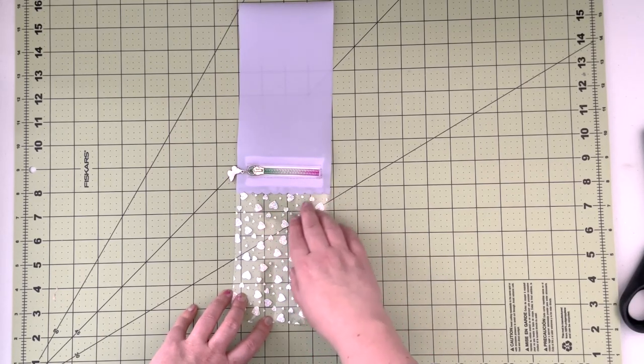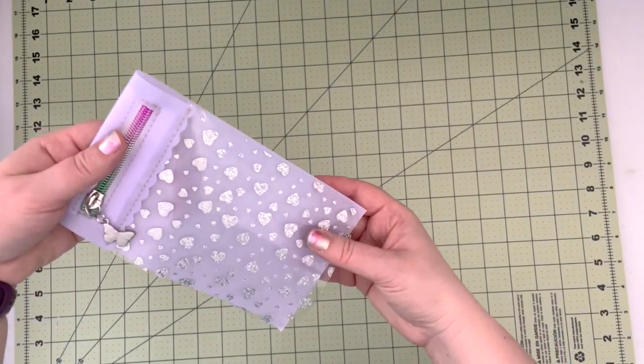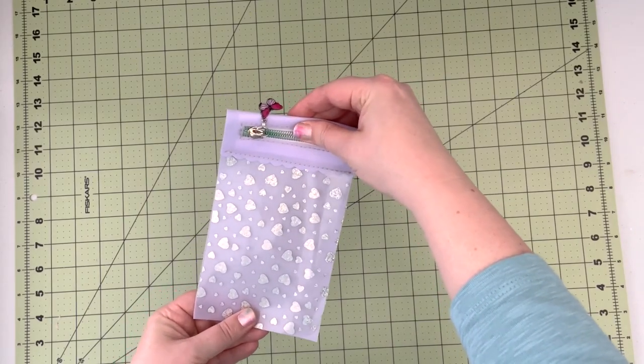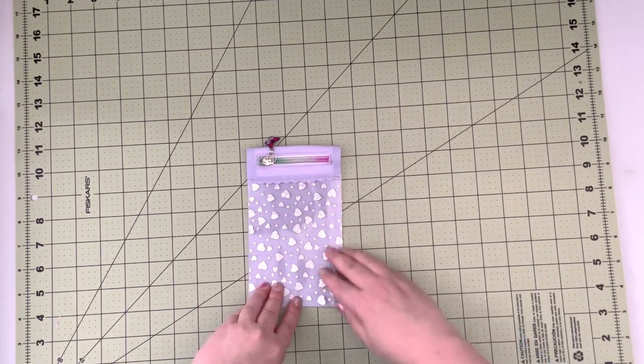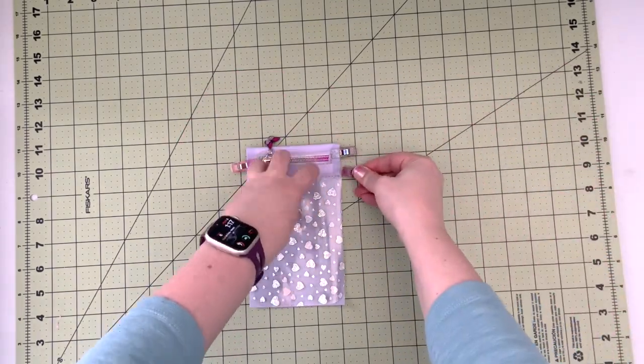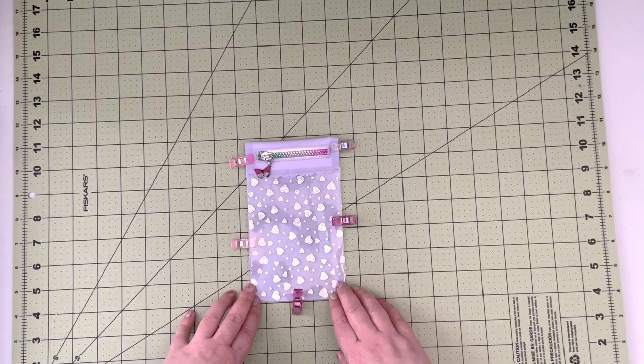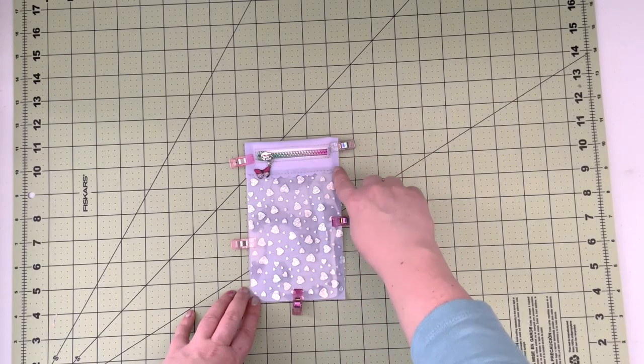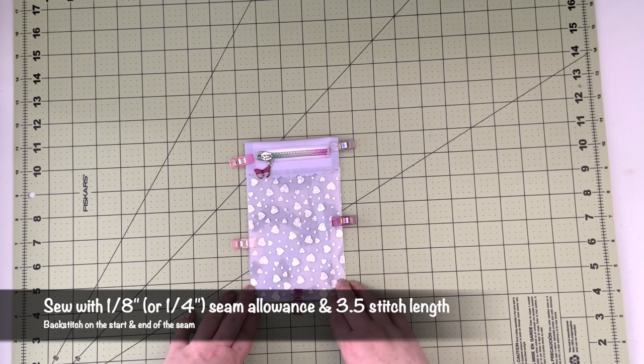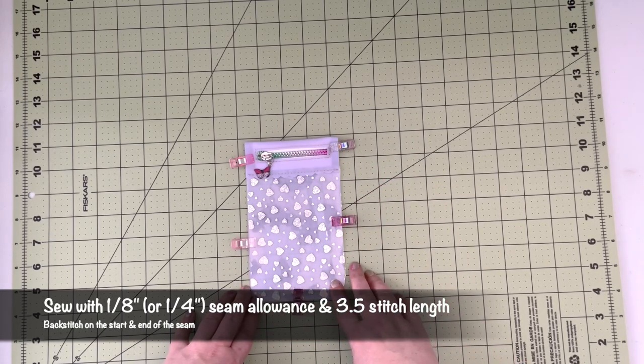Now that our two panels are connected, we're going to prep for our final seam. So you're going to fold the project wrong sides together. Make sure that your panels align nicely and clip on the sides. When you have your project prepped like this, you're going to take it back to the machine and you're going to sew along this edge with the one-eighth of an inch seam allowance and 3.5 stitch length. I'm going to increase my seam allowance a little bit because I'm going to come back and trim my seam allowance with the pinking shears, so I want to give myself a little more space.